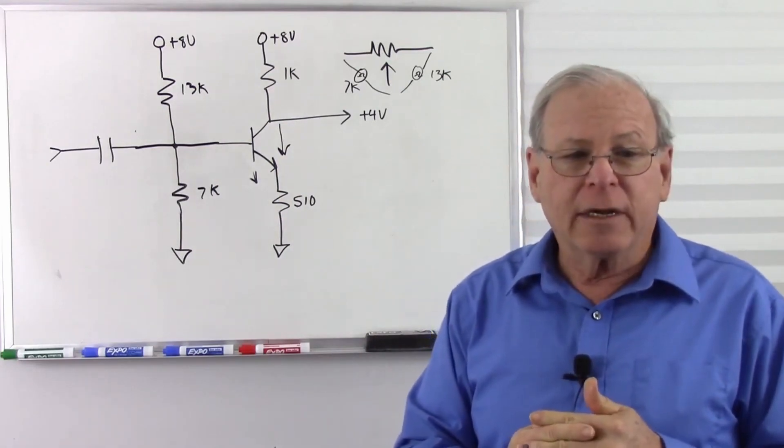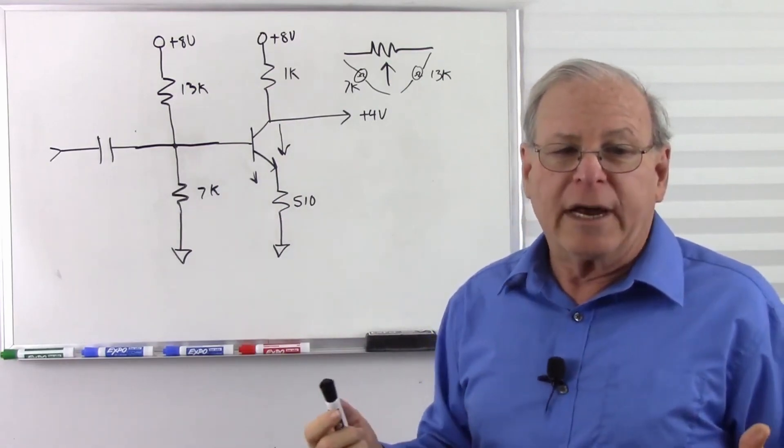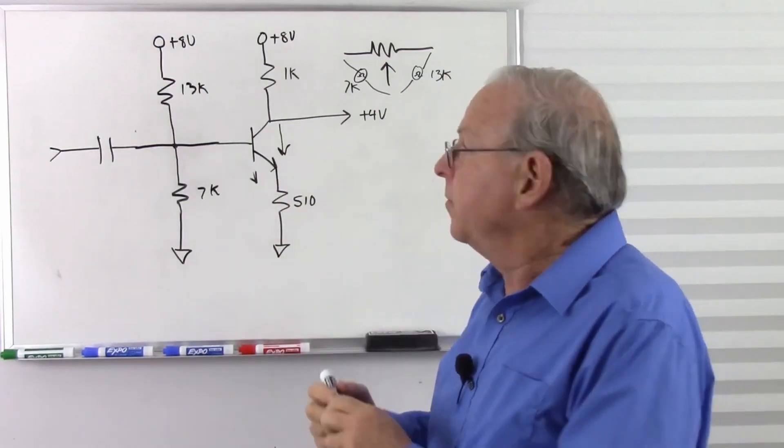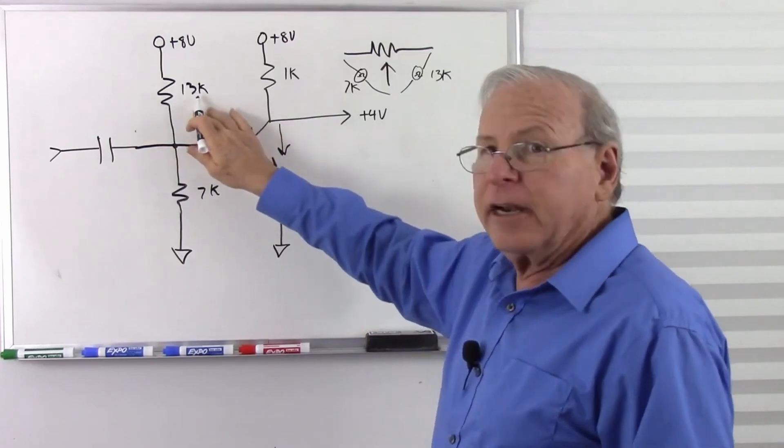Now Mr. Van Wiegen asked, well why not 14 or 6 or 12 and 8 or 6 and 14, why not a different combination? Well, because if I did a different combination, let's say I brought this resistance down and that resistance up.